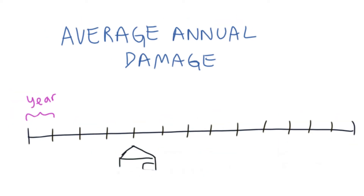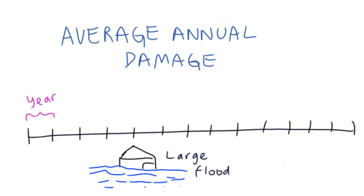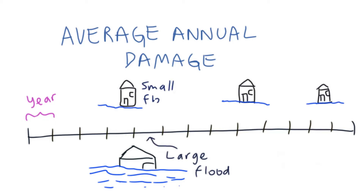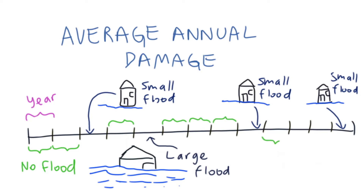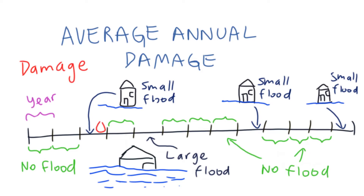Let's use floods as an example. We know that different floods will cause a different amount of damage to a flood-prone area, depending on the size or severity of the flood. Large floods cause more damage than small floods, but large floods occur a lot less often than small floods. The average annual damage is the average damage per year that will occur in a particular area from flooding over a very long period of time.